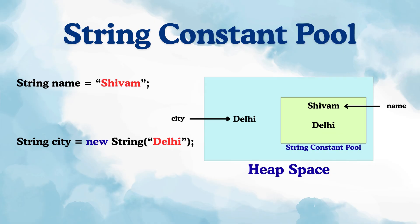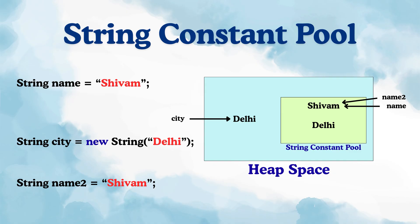Now there is one more rule in the pool: duplicates are not allowed. So if you create another string whose value is 'shivam', like 'String name2 = "shivam"', then another entry will not be made in the pool — name2 will also start pointing towards the same one. Whenever you create a literal, it will be saved in the string constant pool. If you create another literal whose value is the same, that reference variable will also point towards the same literal. And this is actually the reason why strings are immutable — because if you change the value against one variable, then the value for all reference variables pointing to the same location would change, which is not right.